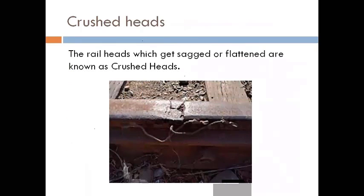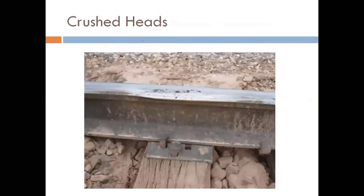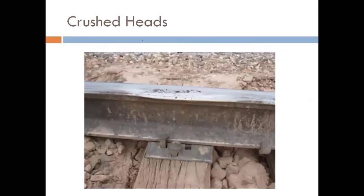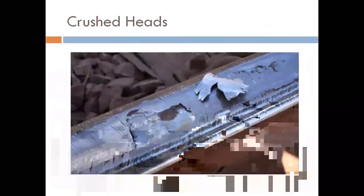The first defect is crushed heads. Rail heads which get sagged or flattened are called crushed heads. When traffic over the rail is very high, the rail head gets crushed. It is not necessary that there must be a crack; the head may simply become flattened on one side. In another example, the top layer material gets chipped off by wear and tear.